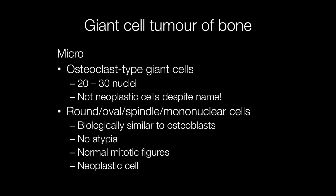The neoplastic cells are the background cells that are round, oval or spindle mononuclear cells. They are biologically similar to osteoblasts and they lack atypia, and there may be mitotic figures but these are normal.